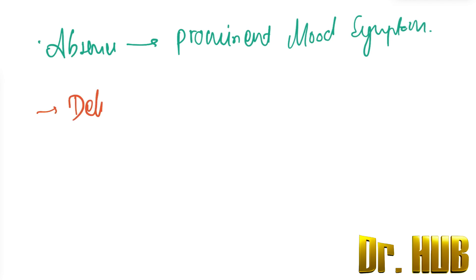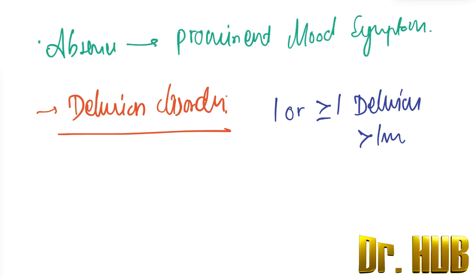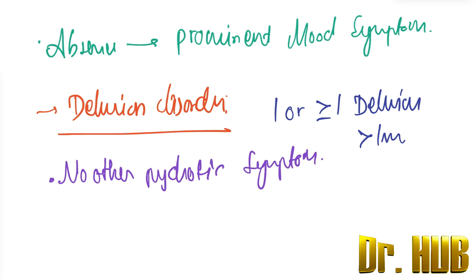Next we move on to Delusional Disorder. In Delusional Disorder, there is one or more delusions lasting for greater than one month. There are no other psychotic symptoms, and there is normal functioning apart from the direct impact of the delusions.